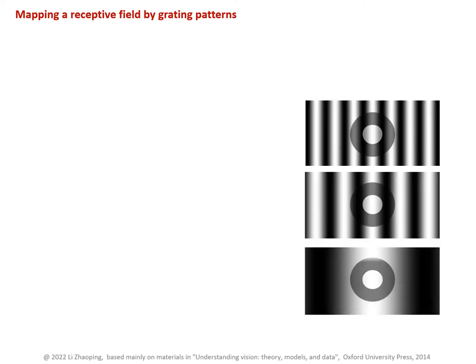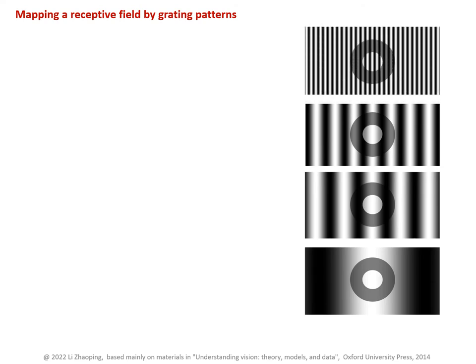However, if the stripes are too wide, the neuron is excited less. In this case, the brighter stripe overlaps with both the on-region and the off-region of the receptive field, so the excitation cancels the inhibition. If the stripes are too narrow, it is also ineffective to excite this neuron.